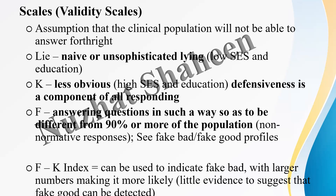For example, if paranoia scores are showing seven, it is probable that the true value could be eight, nine, or ten. The F scale looks at the overall validity of the profile. If the F score is high, you would consider that the other scale scores may be invalid.